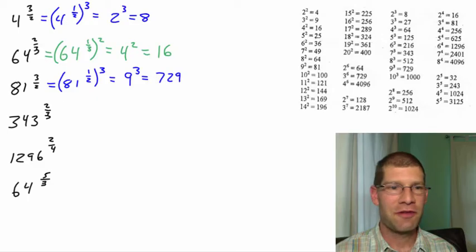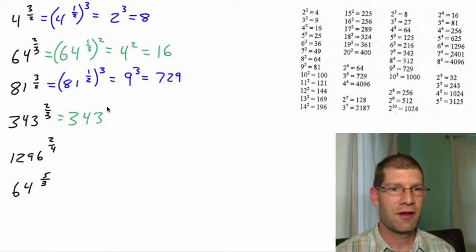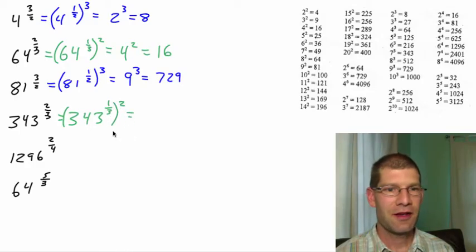The next one, 343 to the 2 thirds. So 343, let's do the root first. 343 to the 1 third, and we'll square that one. So 343 to the 1 third. Look in our third power column. We find it right there. So that's a 7. And we still have the square of the 7. So 7 squared is 49.